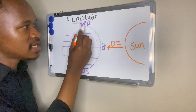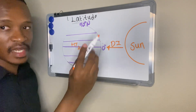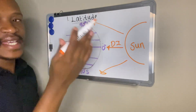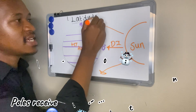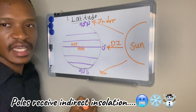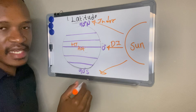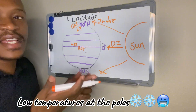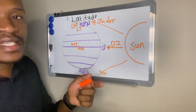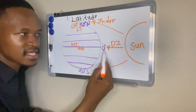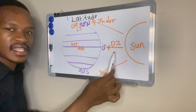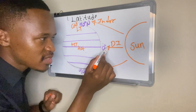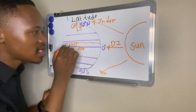If you look at my poles, 90 degrees north and 90 degrees south, my arrows are no longer going direct but they are going indirect. So my poles are receiving indirect insolation, hence they are cold — they have lower temperatures because they receive indirect insolation from the sun. The direct insolation at the equator is covering a small surface area, hence our equator will be hotter.